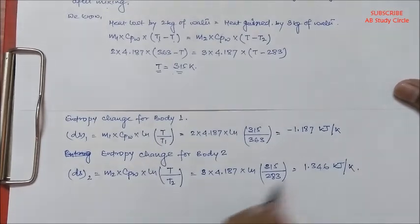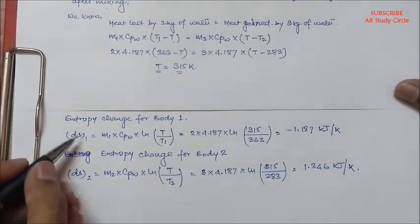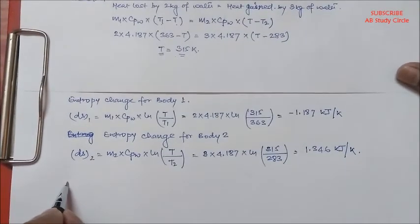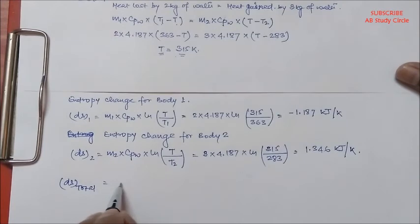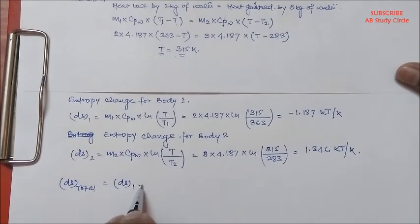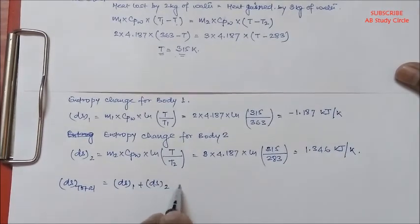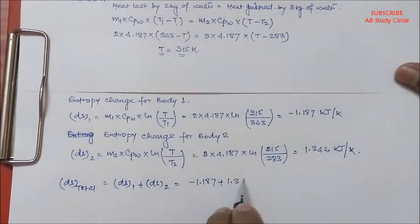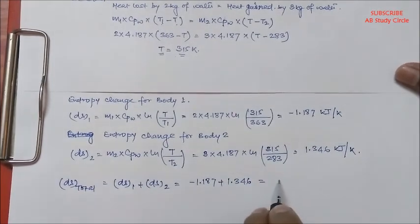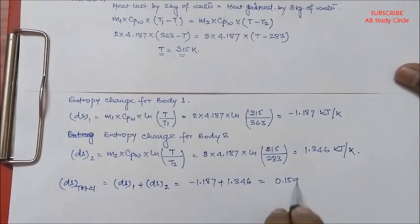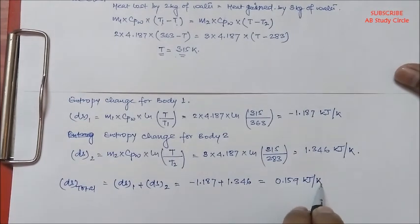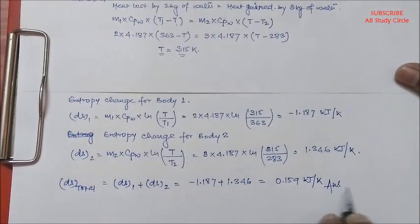So we have got the entropies for individual bodies. The total entropy change, ΔS total, will be the algebraic sum of individual bodies. So it will be -1.187 + 1.346 and it will be 0.159 kJ per Kelvin. And this is your answer.